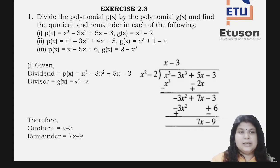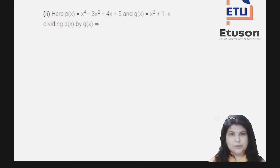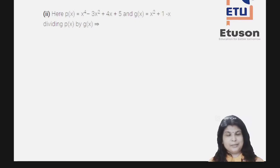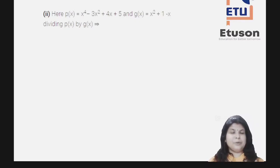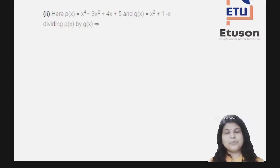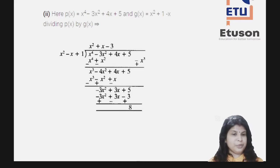Now let us go to the next problem. P(x) = x⁴ - 3x² + 4x + 5 and G(x) = x² + 1 - x. So the dividend is x⁴ - 3x² + 4x + 5 and the divisor is x² - x + 1. We are going to divide it like in the previous problem.